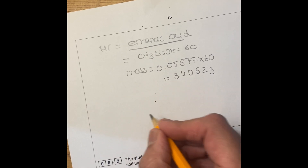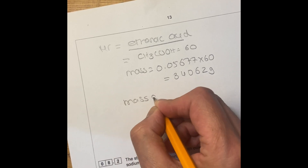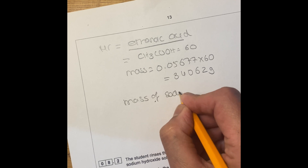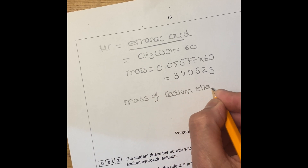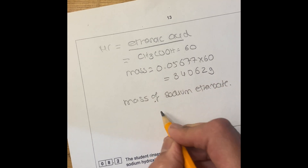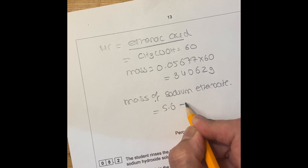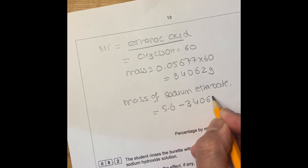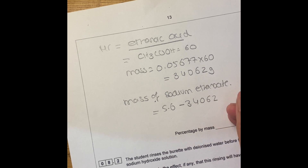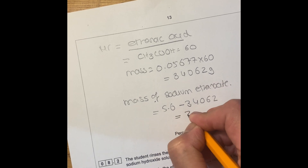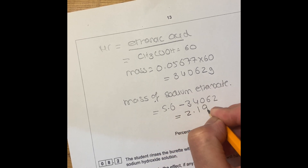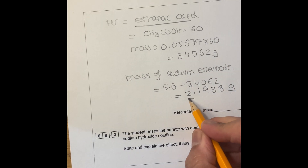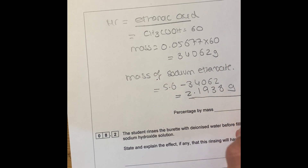We know the total sample mass is 5.6 grams. The mass of sodium ethanoate equals 5.6 minus 3.4062, which gives 2.1938 grams. So you now have the mass of sodium ethanoate.